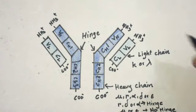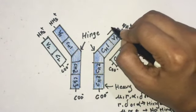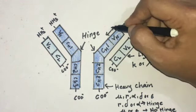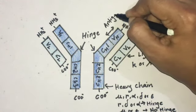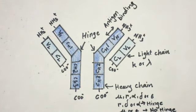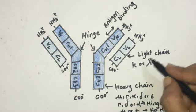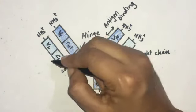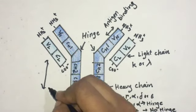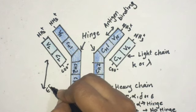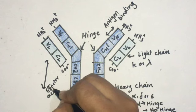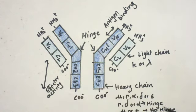The variable region is the antigen binding region — all variable regions are antigen binding regions. The constant region is responsible for effector activity.